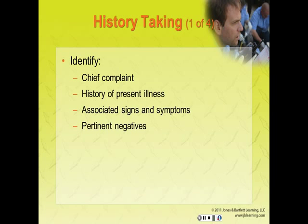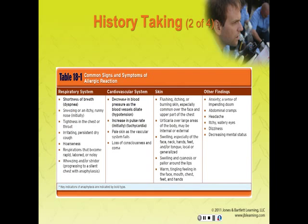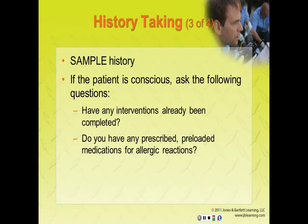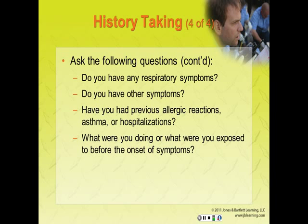History taking: identify the chief complaint and history of the present illness, associated signs and symptoms, and pertinent negatives. Common signs and symptoms of allergic reaction include respiratory, cardiovascular, skin, and other findings. If the patient is conscious, ask the following questions specific to allergic reactions: Have you already completed any interventions? Do you have any prescribed preloaded medications for allergic reactions? Do you have any respiratory symptoms? Do you have other symptoms such as itching, rash, hives, pallor, or bite or sting marks, or have you experienced any confusion? Have you had previous allergic reactions, asthma, or hospitalizations? What were you doing or what were you exposed to before the onset of symptoms?